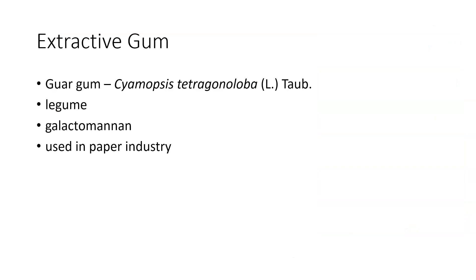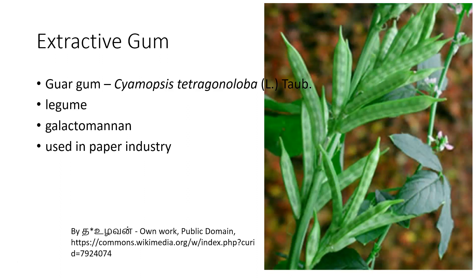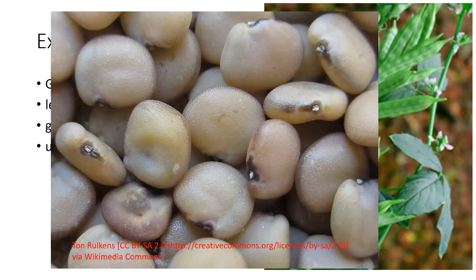Guar gum comes from a legume and is a galactomannan — a combination of galactose and mannose. This gum is used extensively in the paper industry to bind things together and make certain types of paper. The plant has little bean-like pods; the seed is extracted and the gum is then drawn from the seed and used as an adhesive.